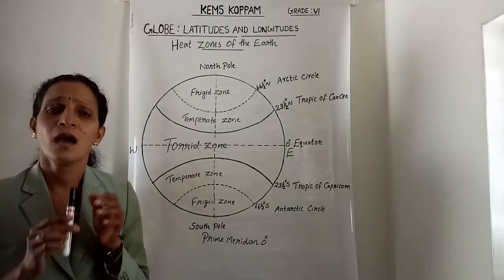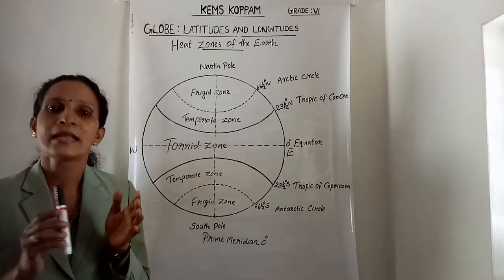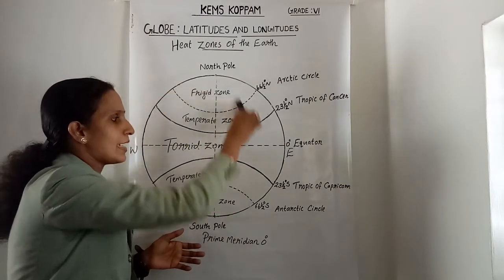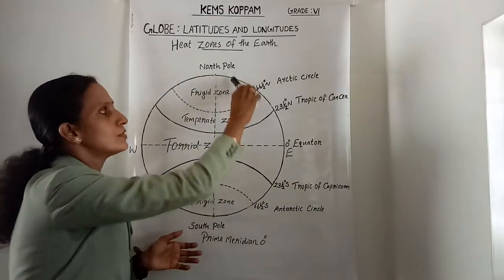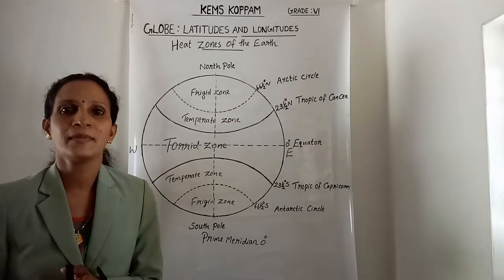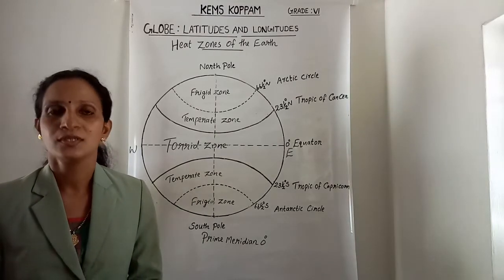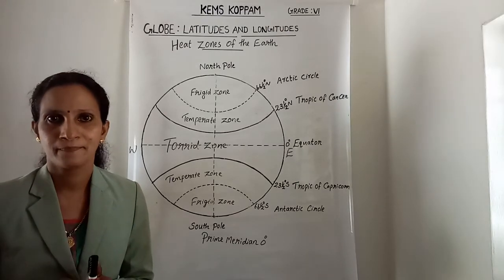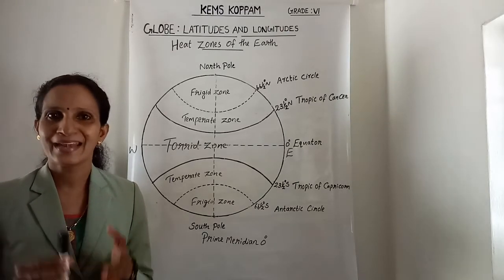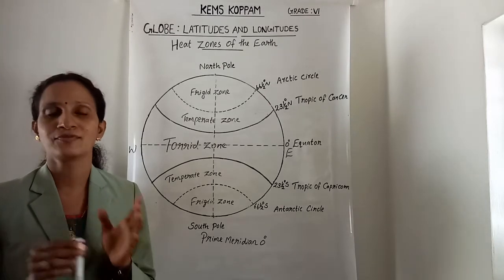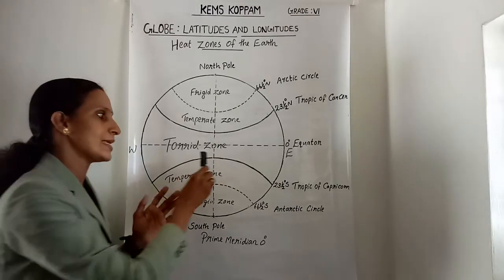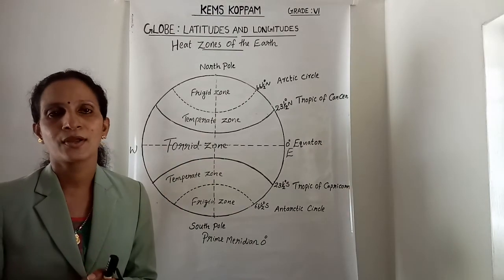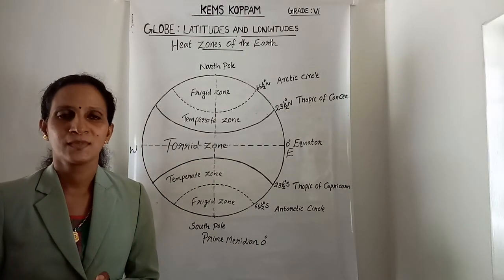All semicircles running from the North Pole to the South Pole are called meridians of longitude. Zero degrees longitude is known as the Prime Meridian. The Prime Meridian divides the earth into two equal halves — the eastern hemisphere and the western hemisphere. Thank you.